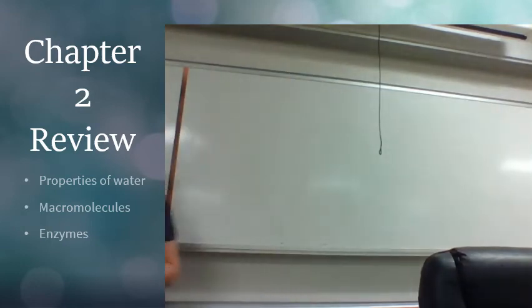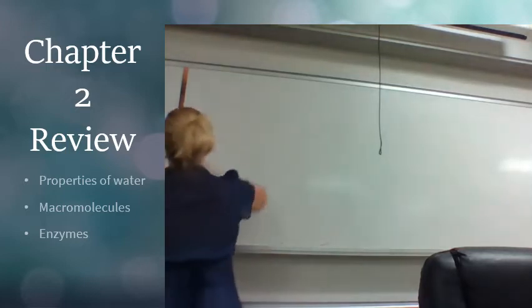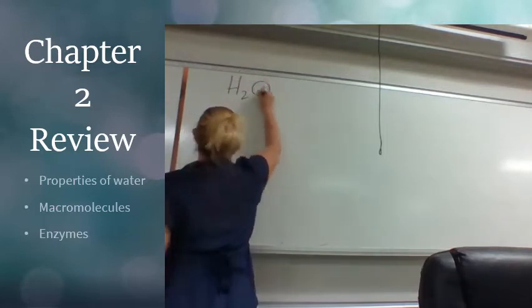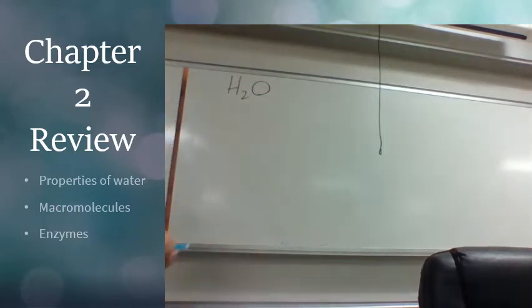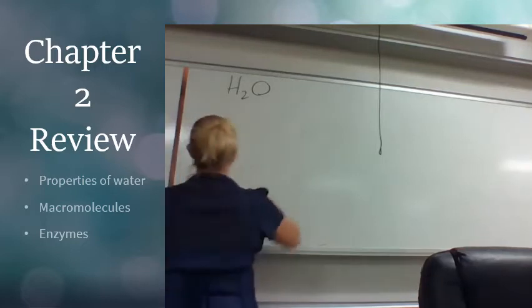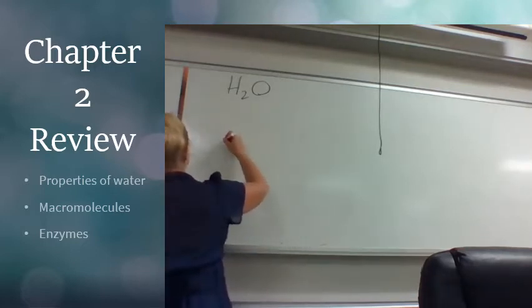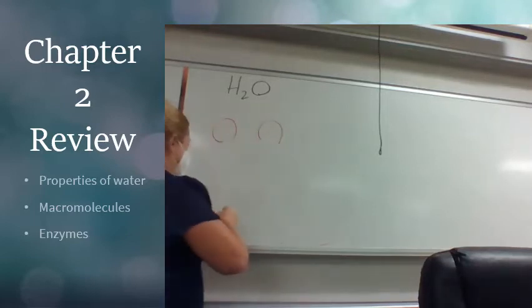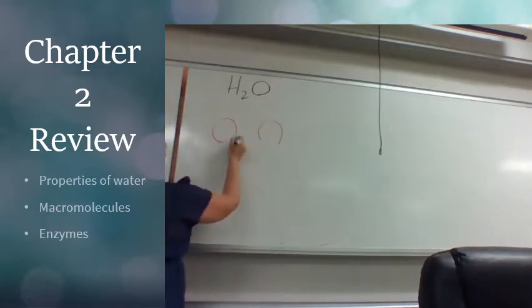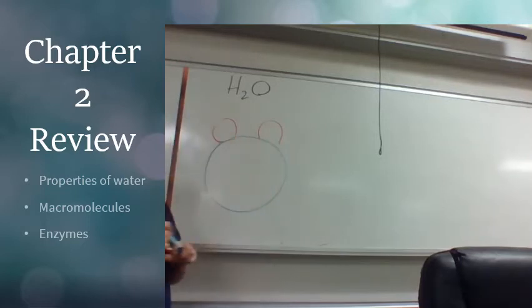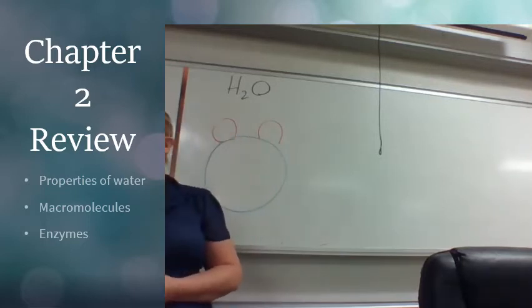All right, so we talked about the properties of water, section 2.2. What's the chemical formula of water? H2O. So how many hydrogens do we have and how many oxygens? I'm going to draw my molecule like this, like a Mickey Mouse. We have our two little itty-bitty hydrogens and our big old fat oxygen.